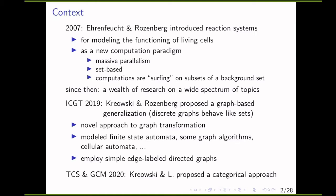Two years ago at ICT, Krejowski and Rosenberg proposed a graph-based generalization and a novel approach to graph transformation. In a case study, they modeled finite-state automata, some graph algorithms, and cellular automata, employing simple edge-label directed graphs. Last year, Krejowski and I proposed a categorical approach to cover more categories and algebraic structures on which reaction systems can be based.